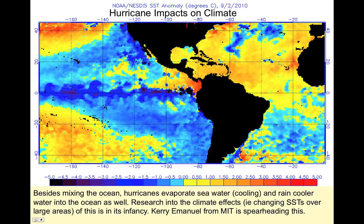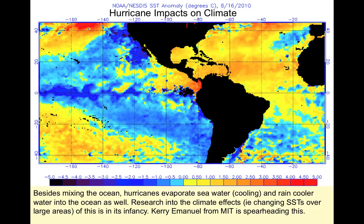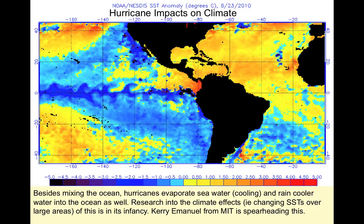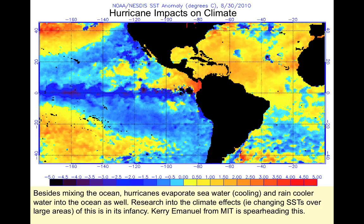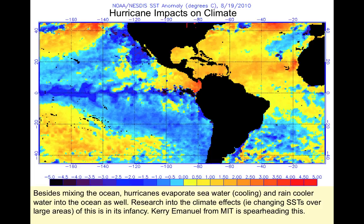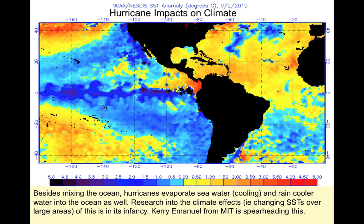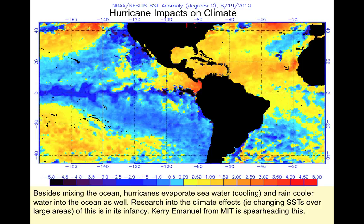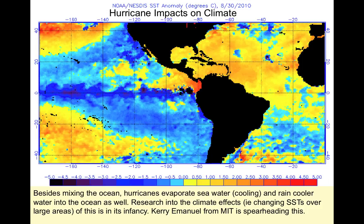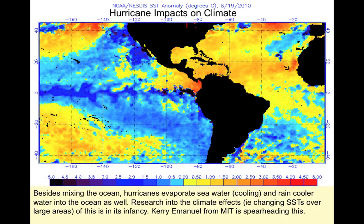Other ways hurricanes can cool the water besides mixing up colder water from beneath: they evaporate seawater, and evaporation cools the surface. They also produce rainfall — rainfall forms at higher heights where the air is colder in the upper troposphere and falls on the ocean, also cooling it. Research into these climate effects is really in its infancy, but it's thought to be important not just now and in the future, but possibly in past climate fluctuations.